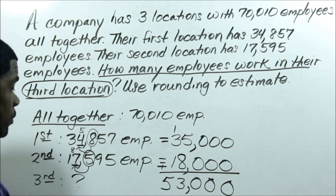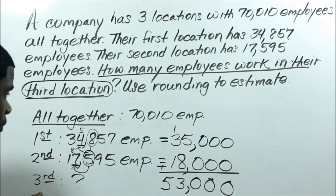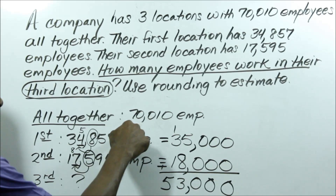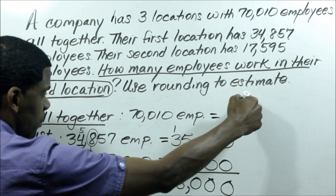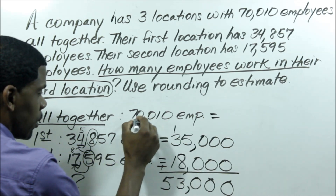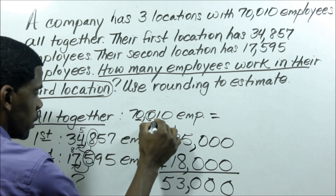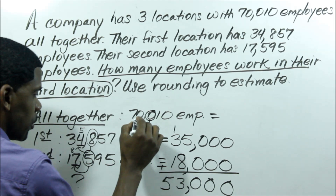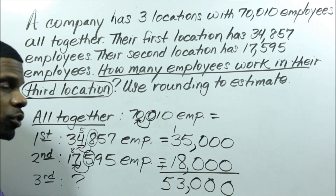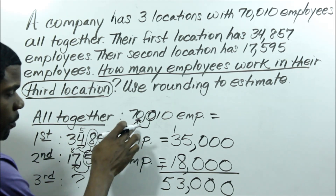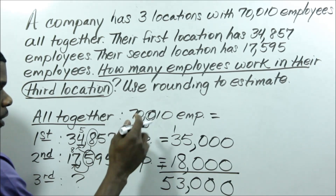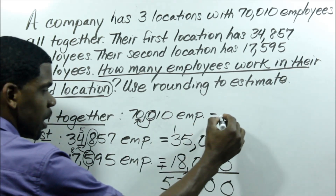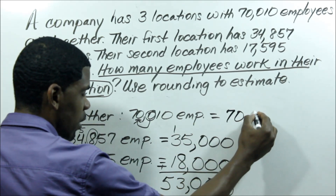What's missing? I don't know my third location, but I do know the total. I also need to round the total. My number is 70,010 — the thousands digit is 0, and the hundreds digit is also 0, which is less than five, so it stays the same. So 70,010 rounds to 70,000.